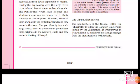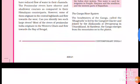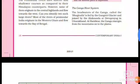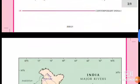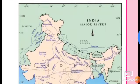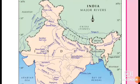Ganga emerges from the mountains onto the plains. This is one of the major rivers of India. In this map, we can see the Ganga River.